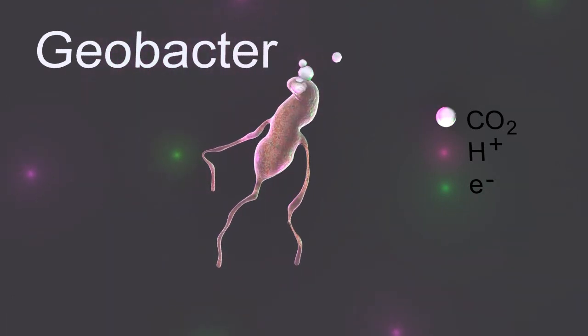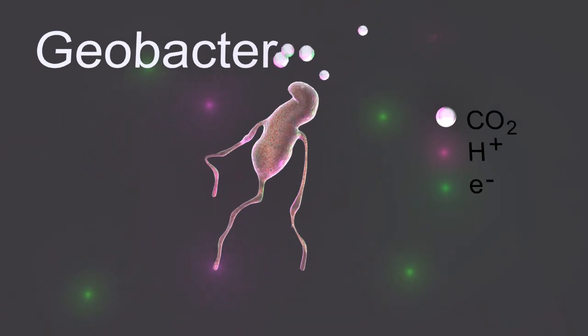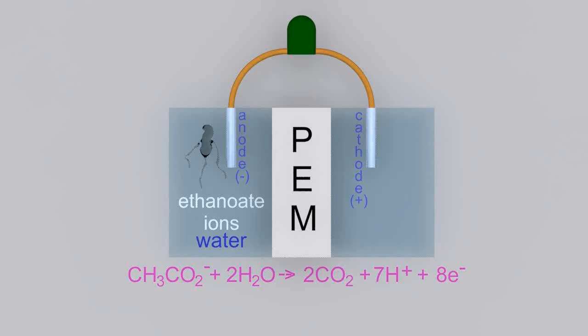And these electrons can be forced to go around a circuit and do work, like a light bulb, for example.